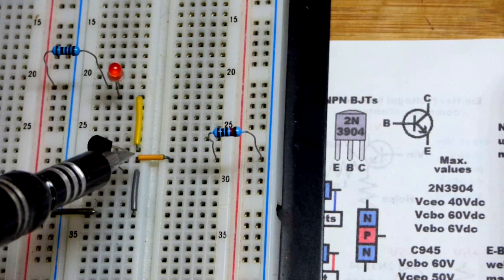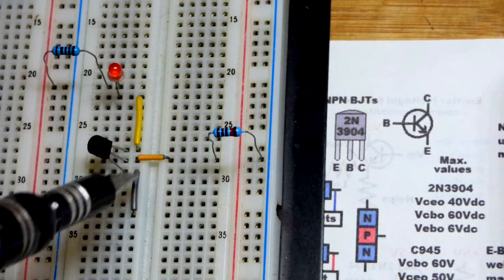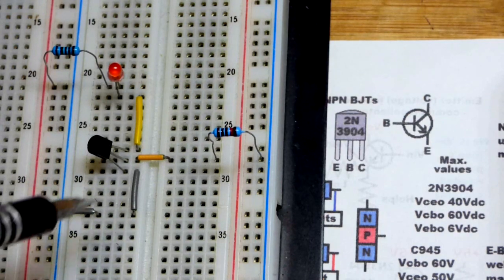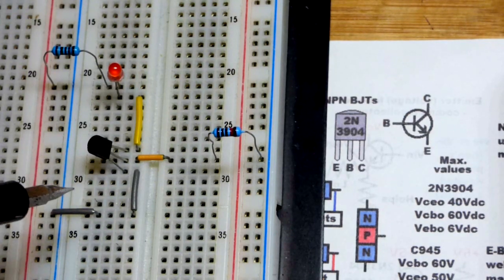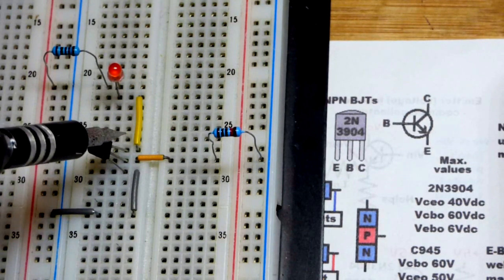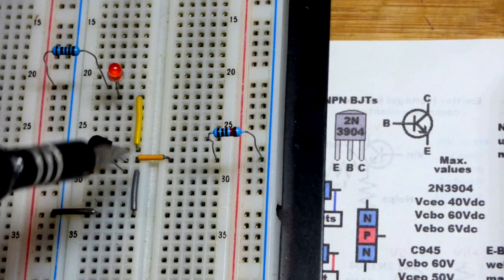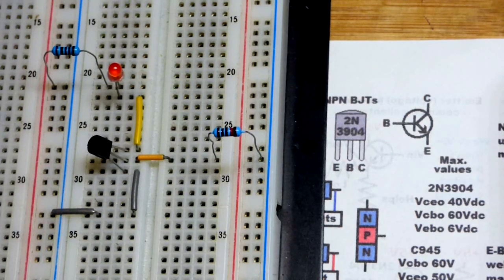It's wired to be off right now. I do know the collector is on top and the emitter is on bottom, so it's wired correctly as an off switch right now. But, let's pretend like we don't know that yet. We just know that the collector or the emitter could be on top or bottom.